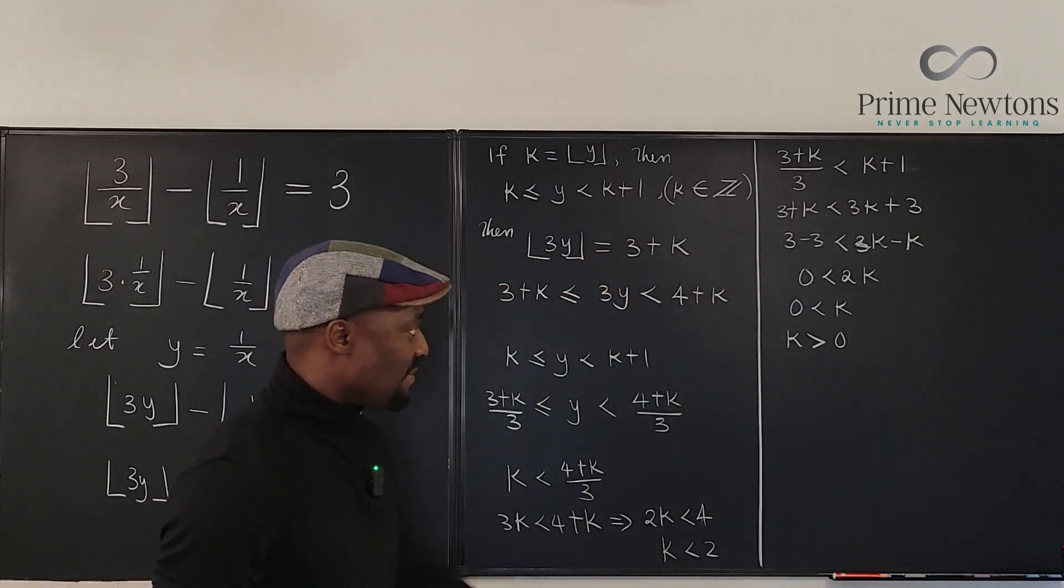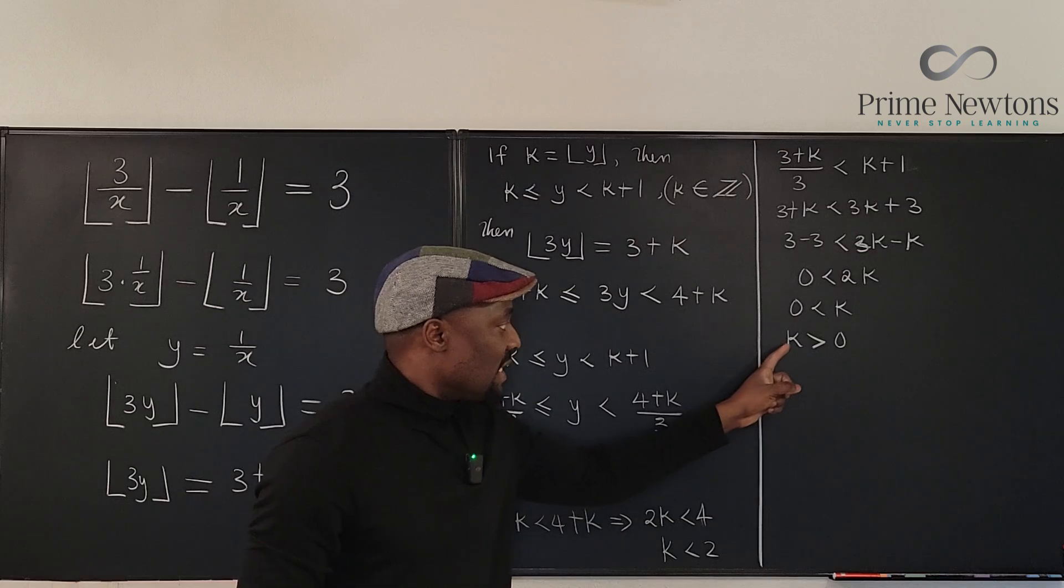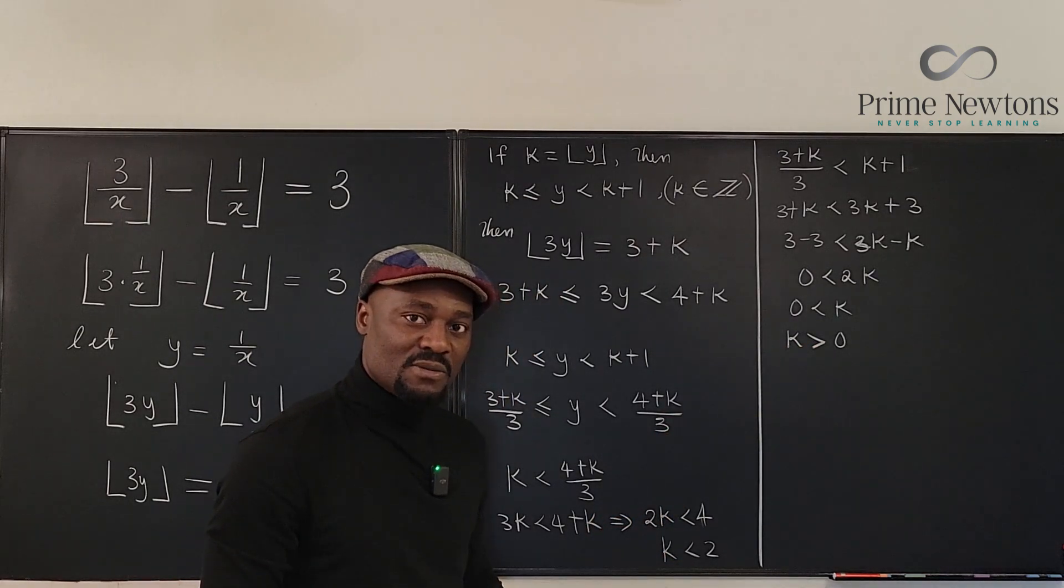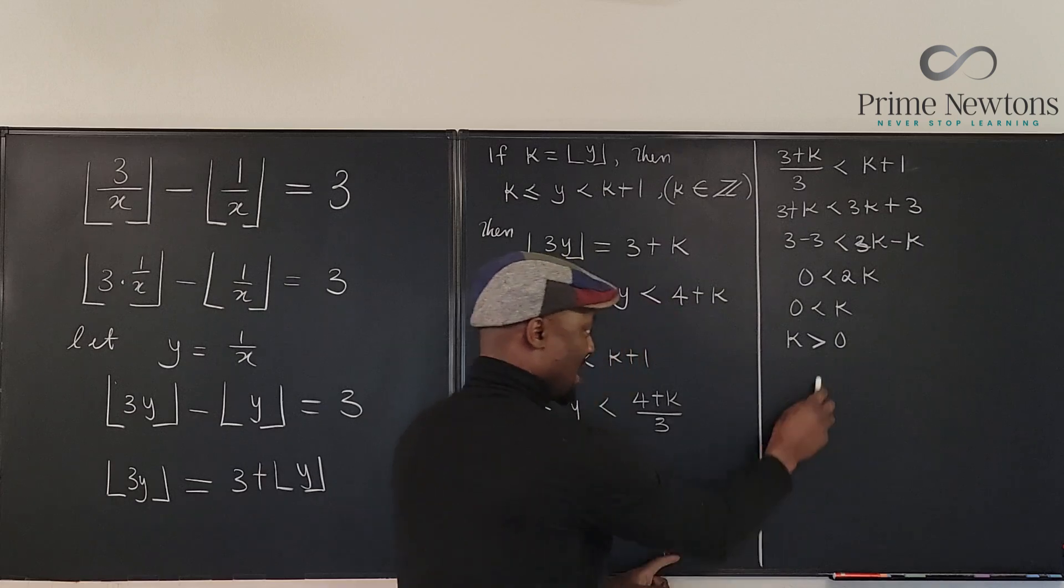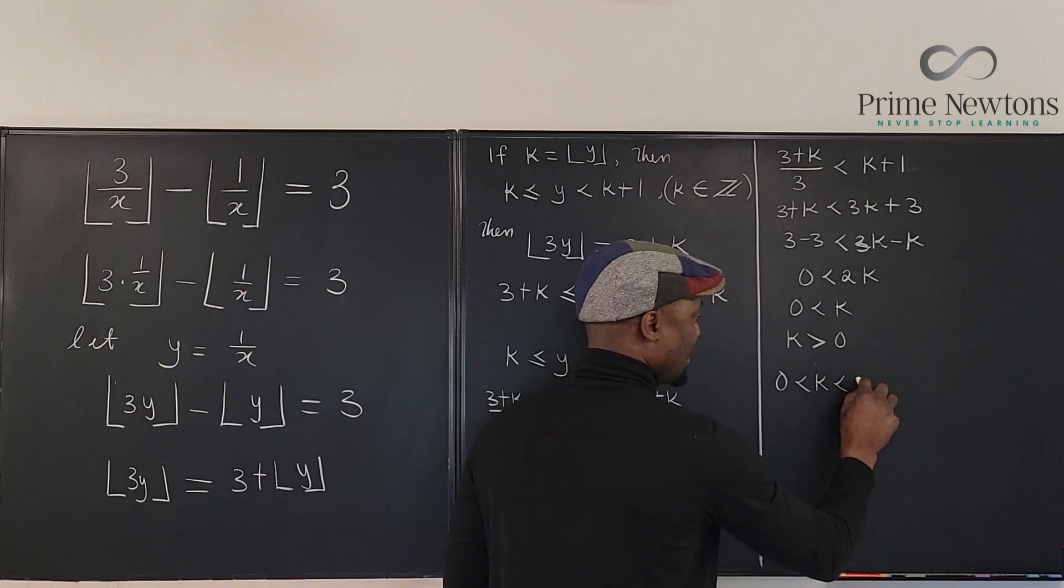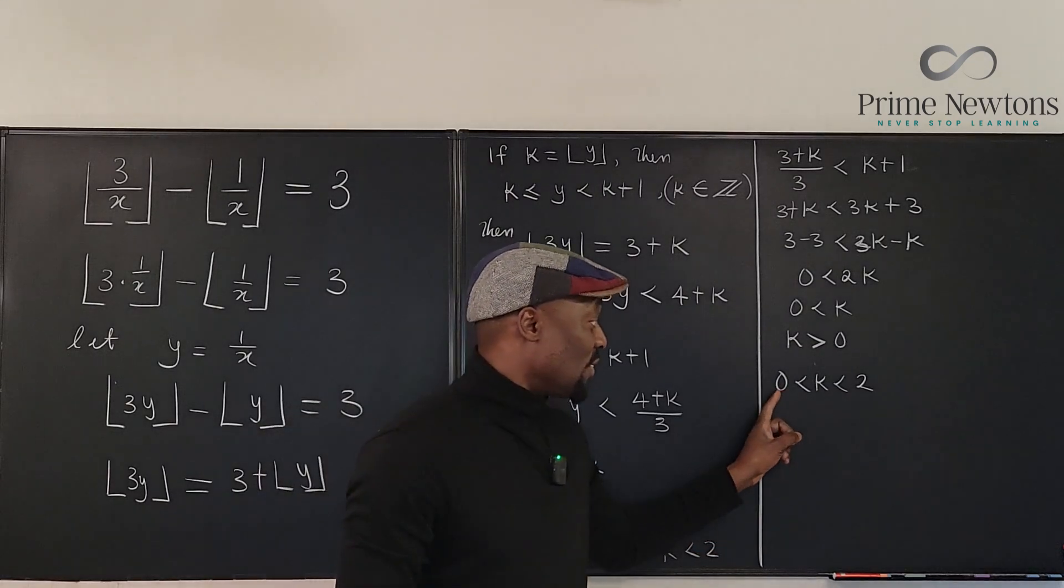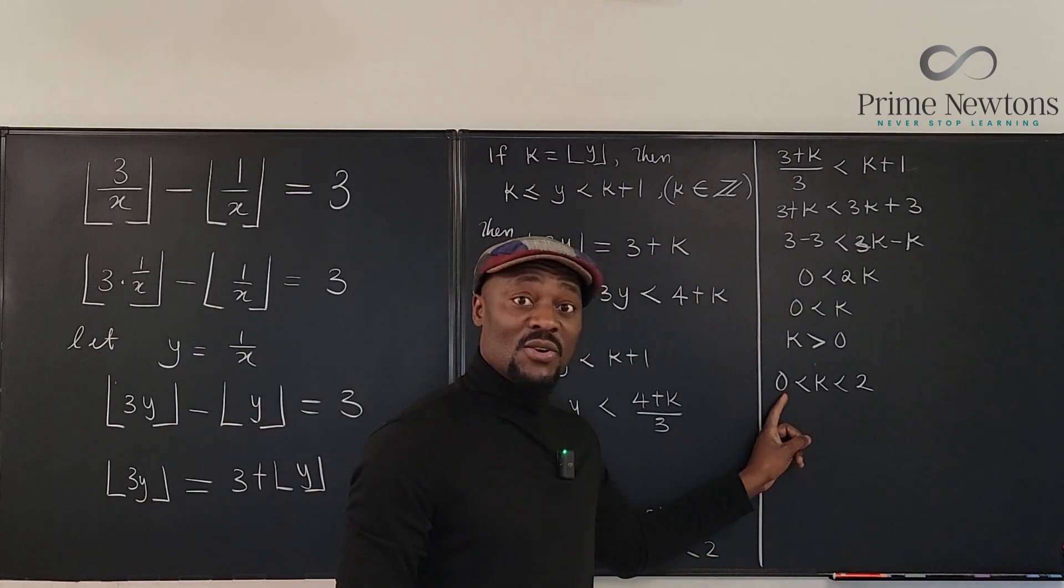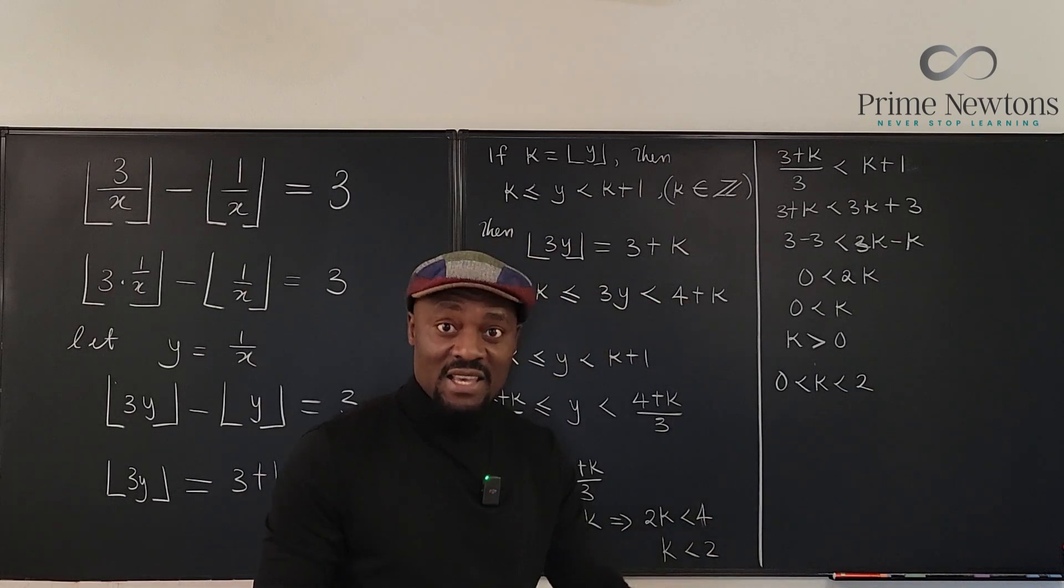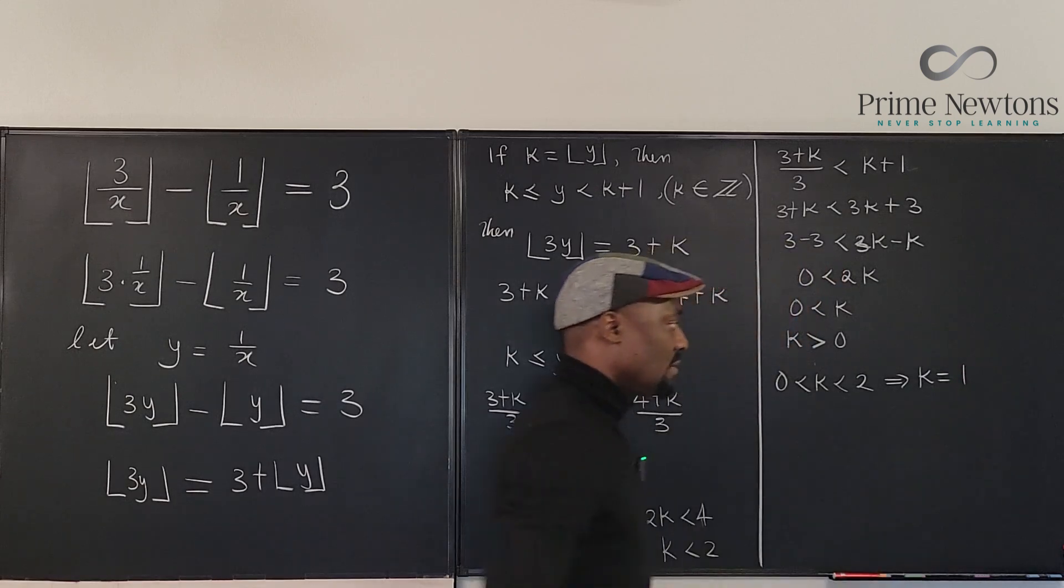So now we have found some gap. k is greater than 0 and k is less than 2. So we can combine these two and say that 0 is less than k and k is less than 2. And because k is an integer, the only integer that is greater than 0 and less than 2 is 1. So definitely we know that k is equal to 1. This implies k is equal to 1.